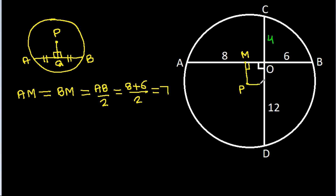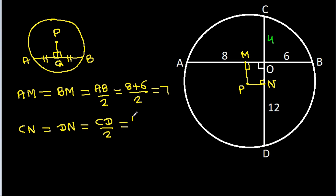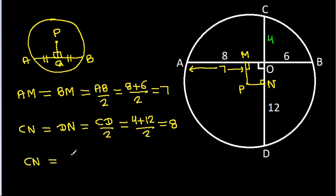And if we draw a perpendicular from P on CD — suppose this point is N — then CN equals DN, which equals CD divided by 2. That is (4 plus 12) divided by 2, which is 8. So we get AM is 7 and CN is 8.